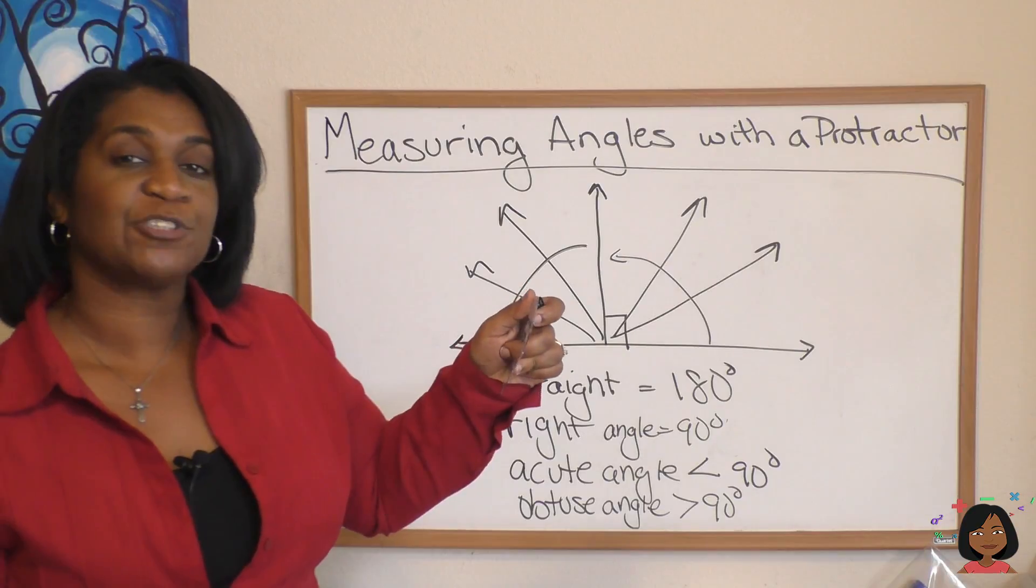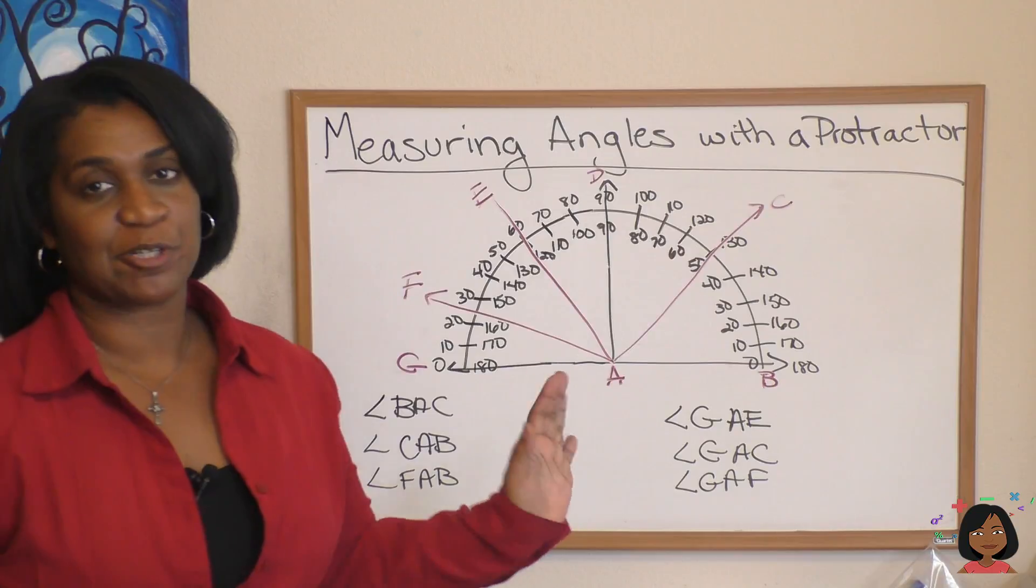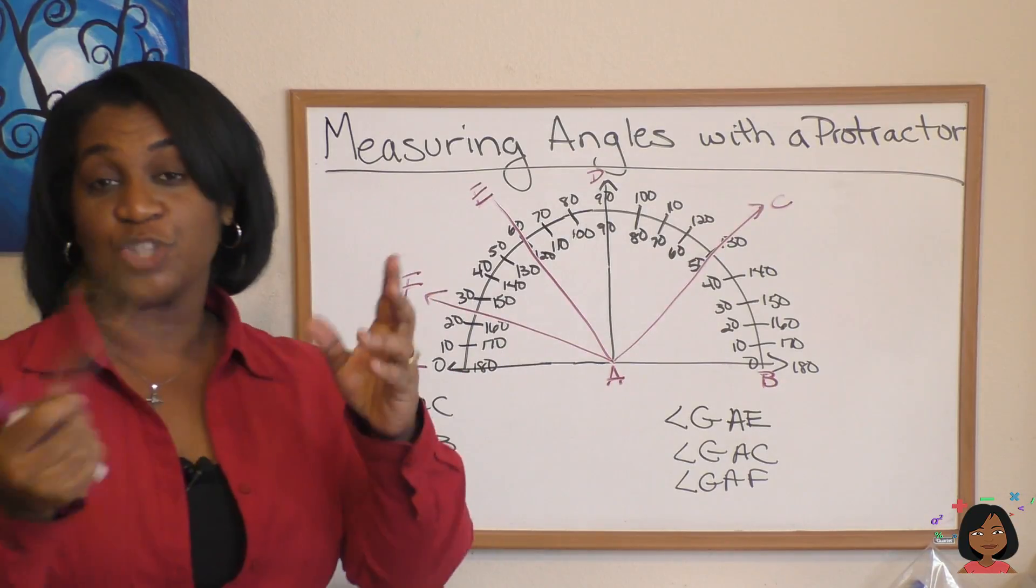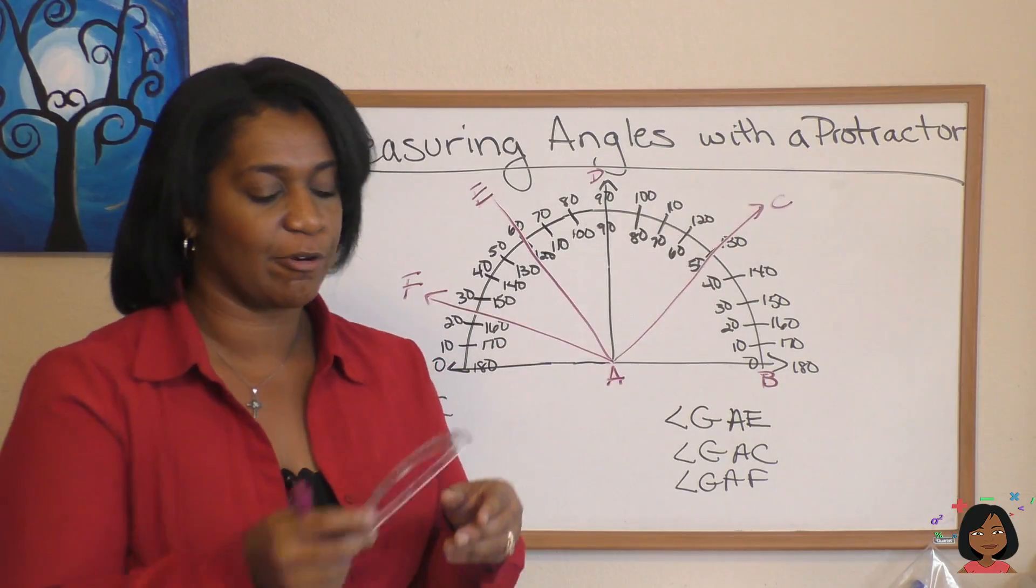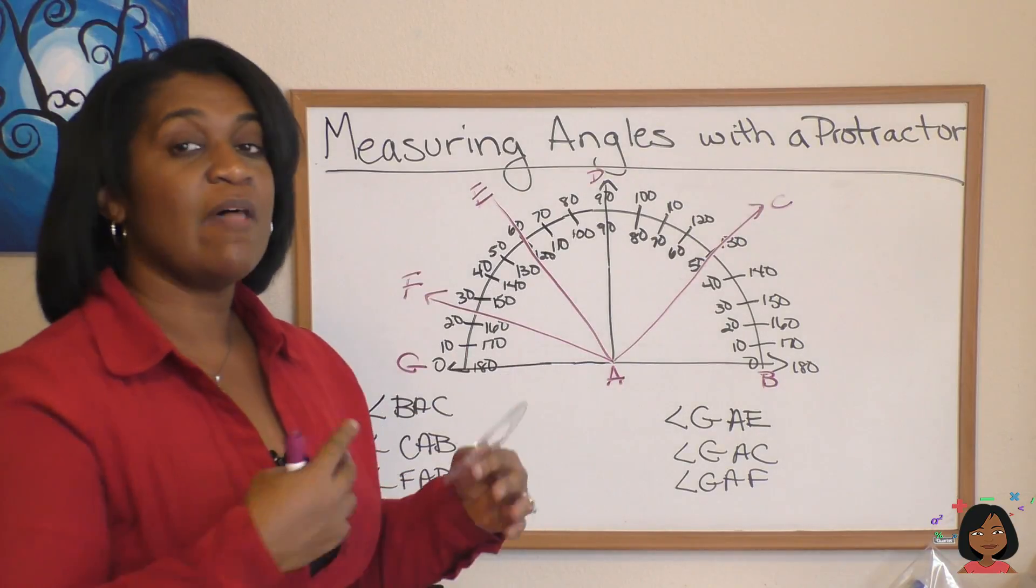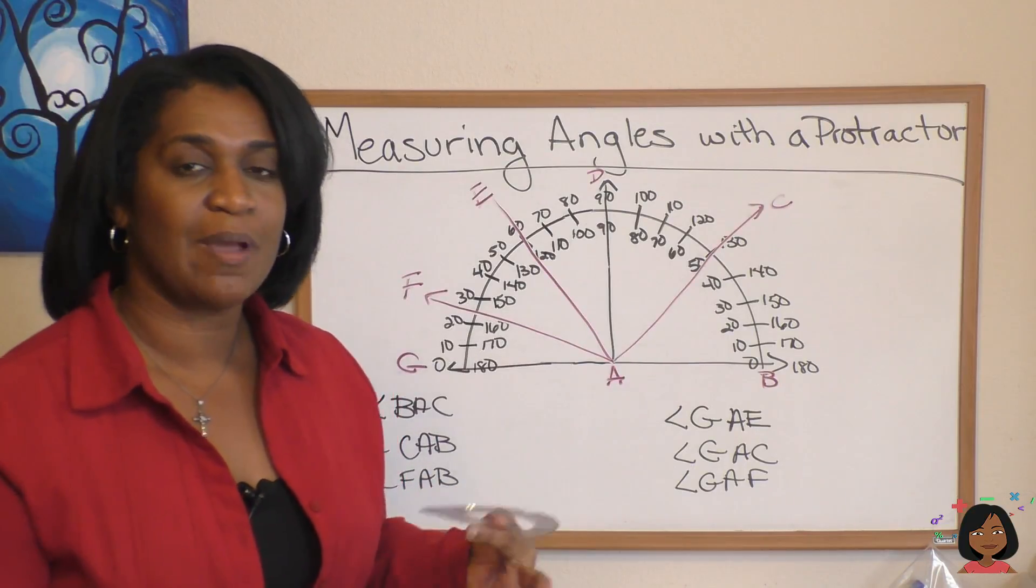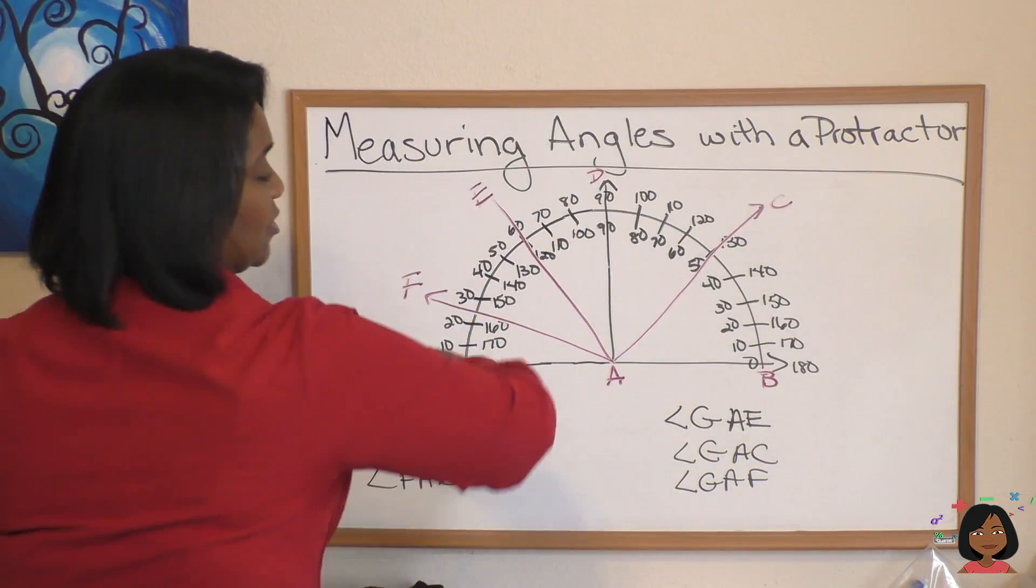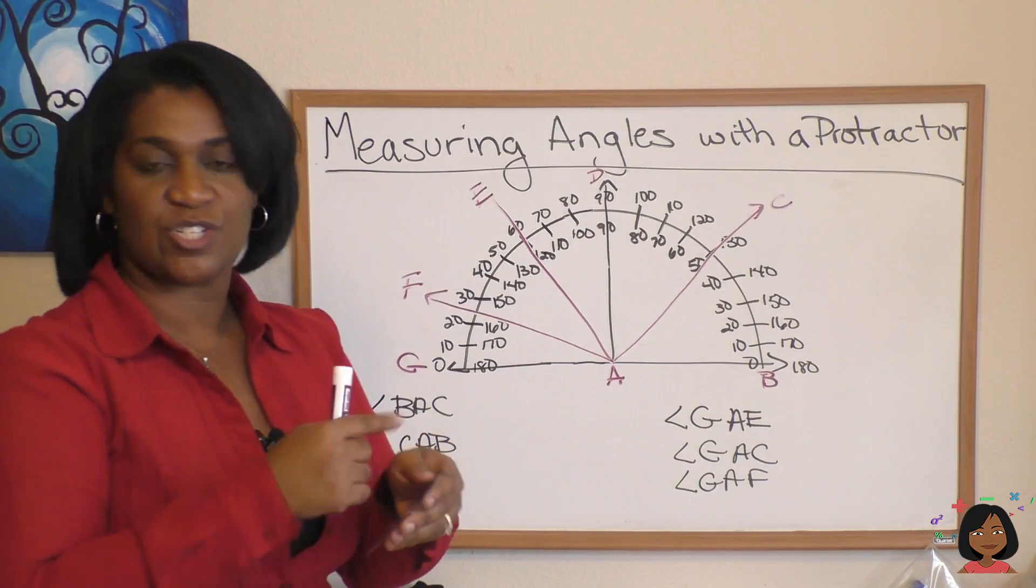Now let's use our protractor to measure some of these angles. Here I have drawn a handy dandy protractor. I know it's not perfect, but it'll work. You should have your own protractor. If you've noticed, there's two sets of numbers on your protractor, one on the inside and one on the outside. That helps you determine what angle you're measuring. Are you measuring one that opens up this way, or one that starts here and opens up this way? We're going to show you which side to use.